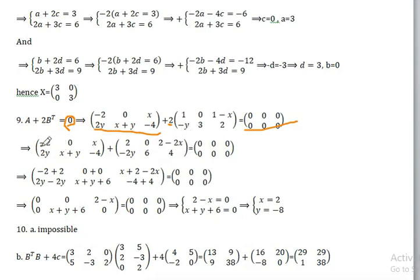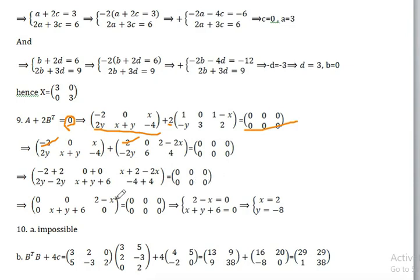Correspondingly adding: 2 plus 2, 0, 0, 0, 0. Then x plus 2 minus 2, x plus 2 minus 2, y minus 2, x plus y plus 6, 4 plus negative 4, equals to 0, 0, 0, 0.